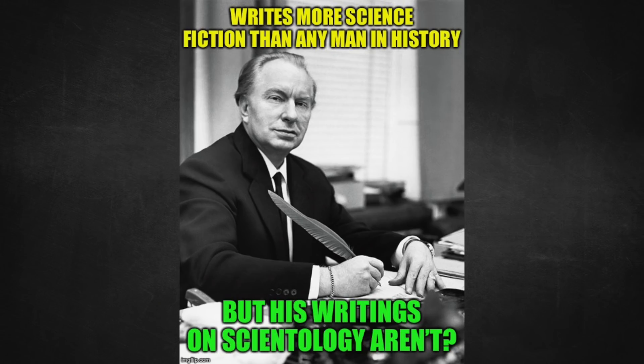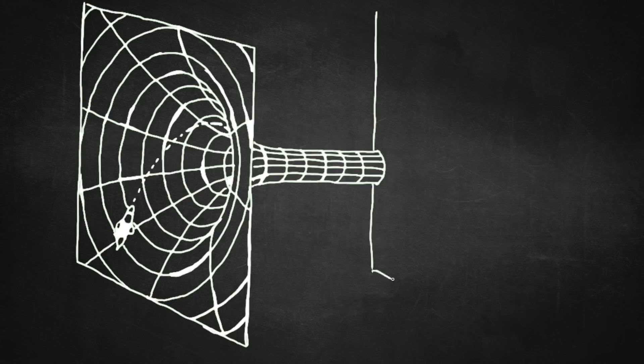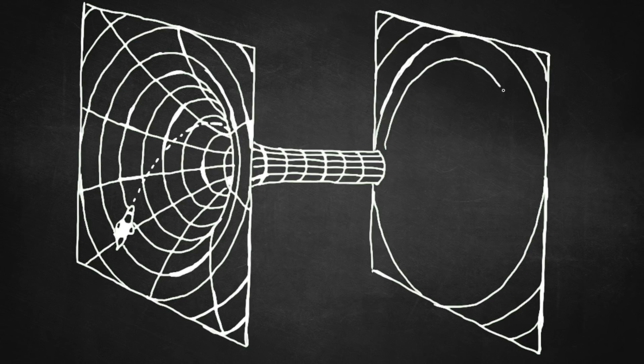Okay, let's take a look at the first meme. It's a picture of L. Ron Hubbard, the founder of Scientology. It says he writes more science fiction than any man in history, but his writings on Scientology aren't. That's a pretty good point. Back when Hubbard was at the prime of his writing career, he was writing pulp fiction. They call it that because of the cheap paper they used to print it on. They'd pay you a certain number of cents per word. And as the meme says, he's written more, or at least had more published, science fiction than anybody in history.